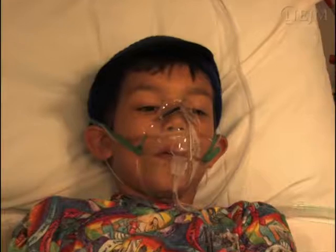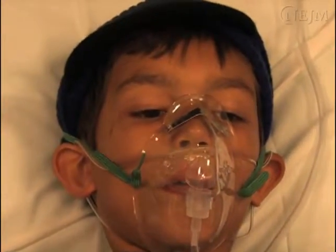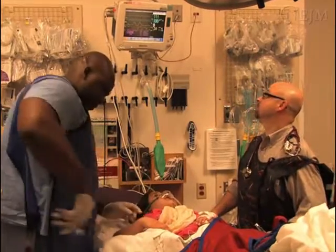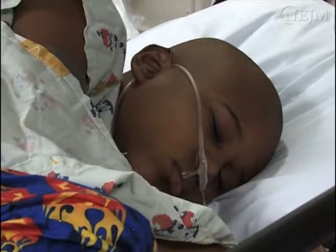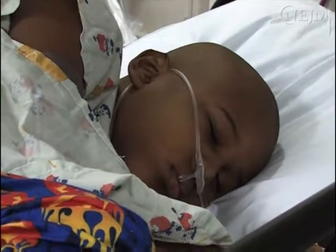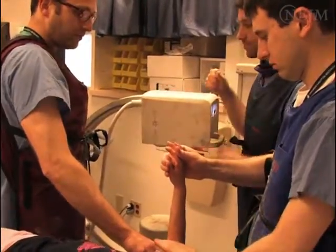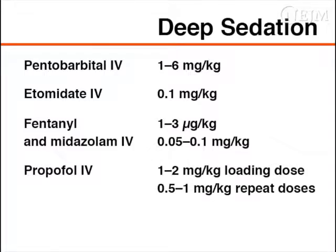The third level is deep sedation, in which patients cannot be easily aroused but can respond purposefully after repeated or painful stimulation. Children sedated to this level may not always maintain a patent airway and adequate respirations, so they must be monitored closely. Deep sedation is often used for painful procedures not amenable to effective local or topical anesthetic agents — for example, fracture reduction or bone marrow aspiration. It may also be indicated if complete motion control is essential during diagnostic imaging. Deep sedation may be achieved with intravenous pentobarbital, etomidate, fentanyl and midazolam, propofol, or propofol in combination with fentanyl or ketamine.